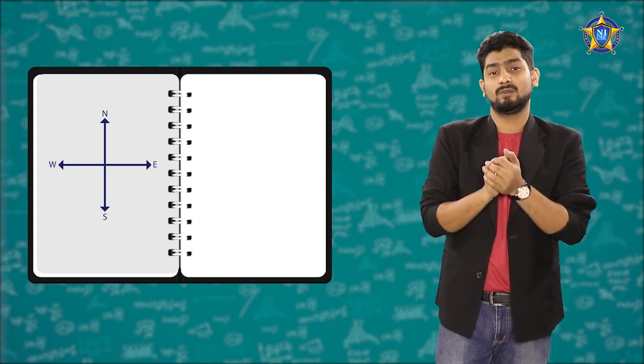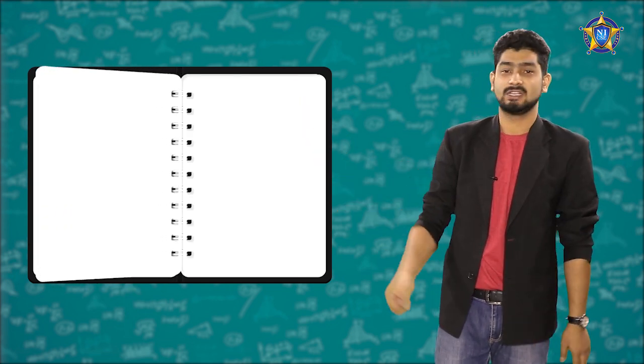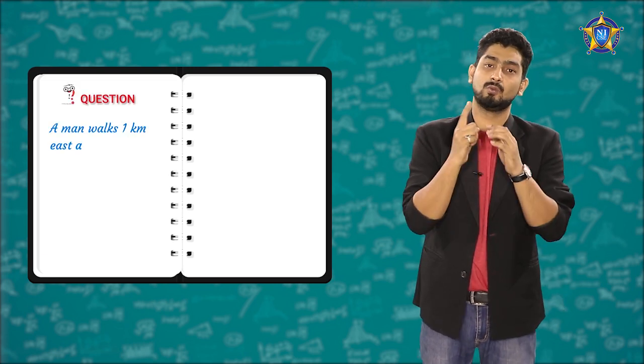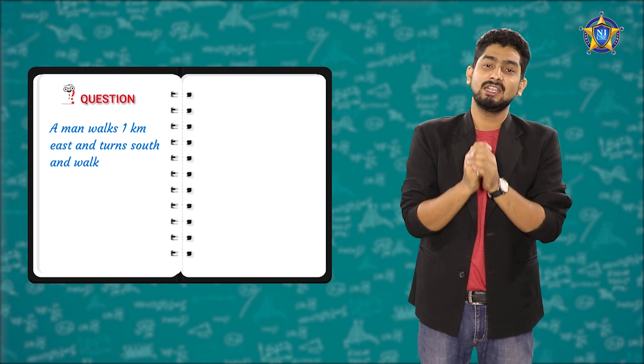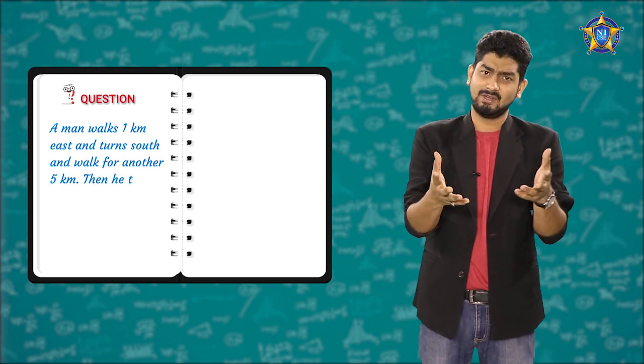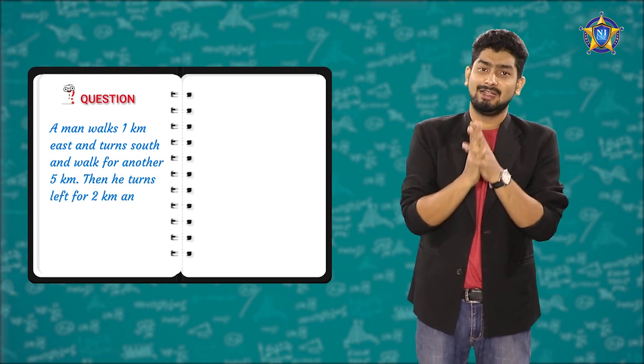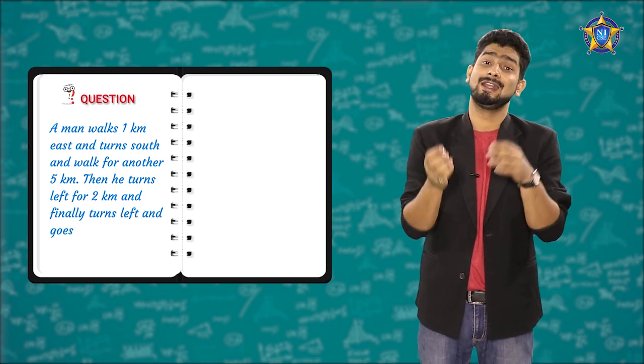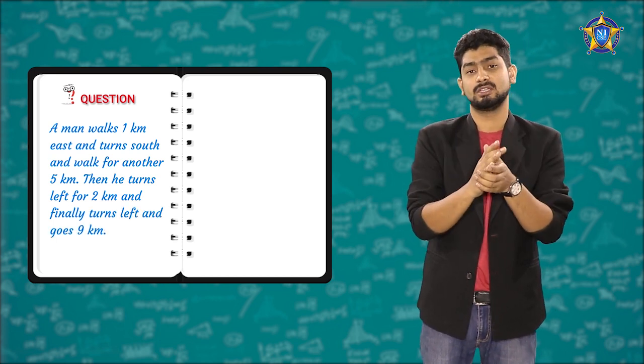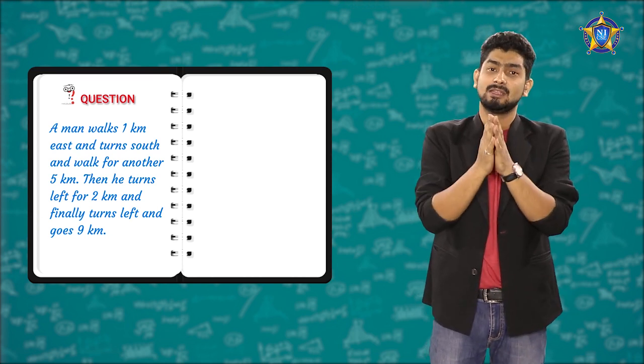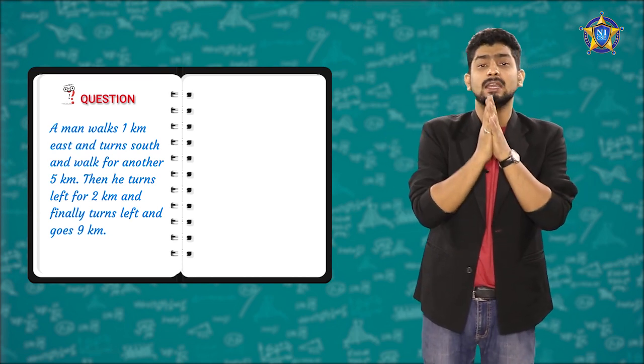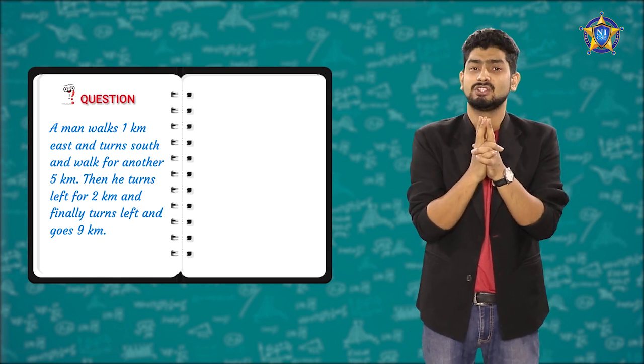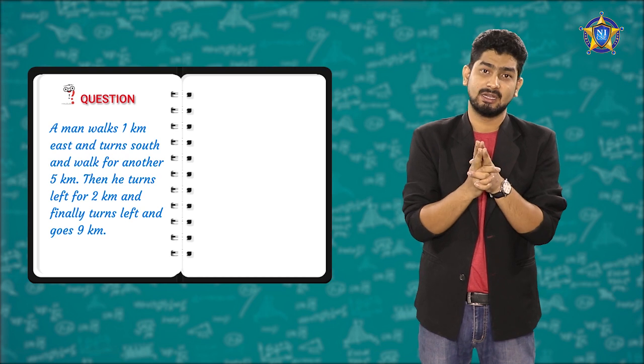Let's take up a question for you to understand. The question says there was a man who walked 1 kilometer east. Then he turned south for 5 kilometers. Then he turned left for 2 kilometers. Finally, he turned left again for 9 kilometers. This is the question. If you identify the key points, there are two directions mentioned and two turnings have been mentioned.